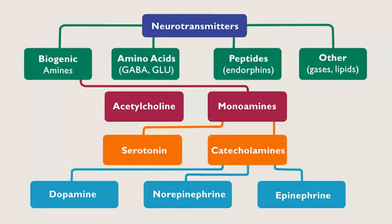There are hundreds of different chemical substances that serve as neurotransmitters. This figure summarizes the different categories of neurotransmitters. Many precursors for neurotransmitters, such as tyrosine, come from the diet.